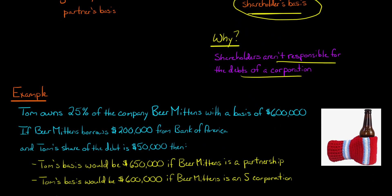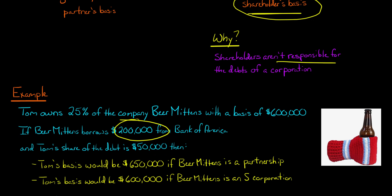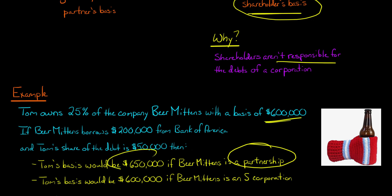Tom owns 25% of the company Beer Mittens, and Tom has a basis of $600,000. If Beer Mittens goes out and borrows $200,000 from Bank of America, and Tom's share of that debt is $50,000, if this is a partnership, Tom's basis is going to increase from $600,000 to $650,000 based on Tom's share of the partnership's debts.